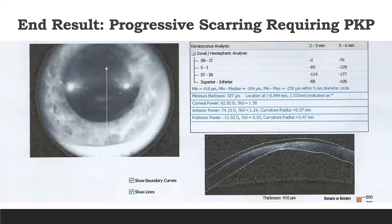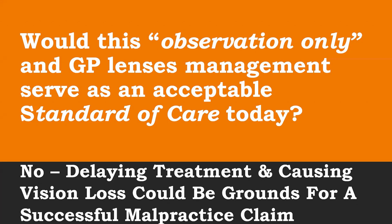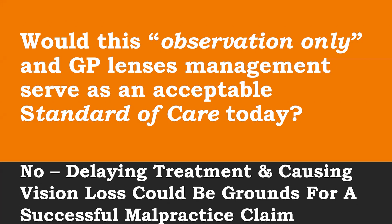Unfortunately for this patient back in those days, the progression resulted in scarring, and to regain vision would require a corneal transplant. Would observation only with gas permeable or scleral lens management serve as an acceptable standard of care today? Quite frankly, no — this is not a good standard of care. Delaying treatment when we have a treatment like Photrexa and iLink cross-linking would be able to prevent some of that vision loss.